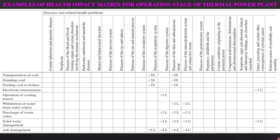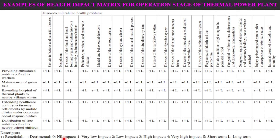This is an example of a health impact matrix for the operational stage of a thermal power plant. In case of discharge of wastewater, against the disease of the digestive system, you can see it is minus 2L. Minus means it is a negative impact, 2 means low impact, and L means long-term impact. Plus is beneficial impact, negative is detrimental impact, and 0 is no impact. 2 is low impact, 1 is very low impact, 3 is high impact, S is short-term, and L is long-term impact.